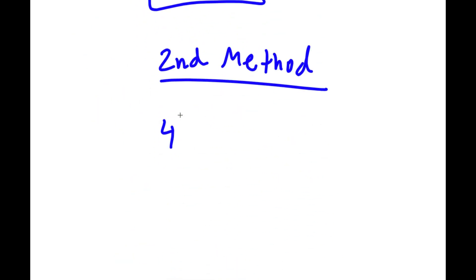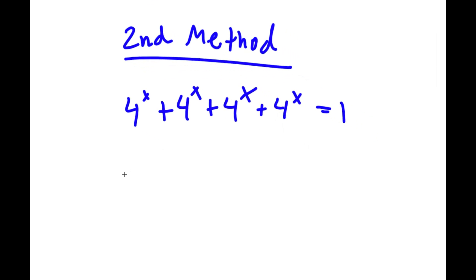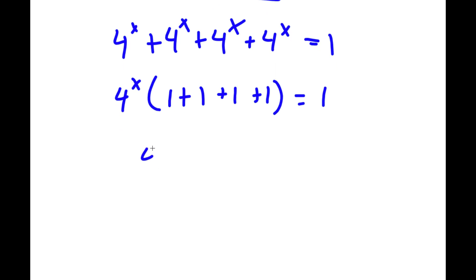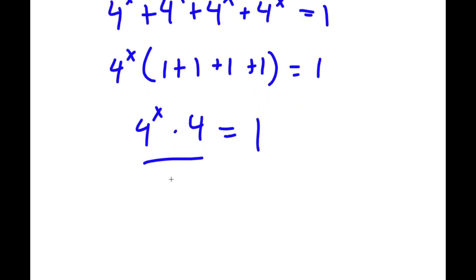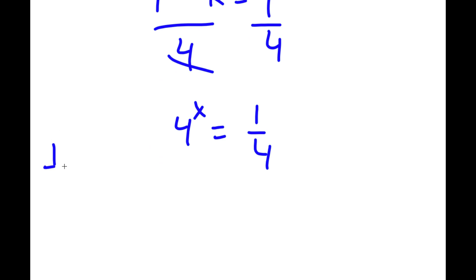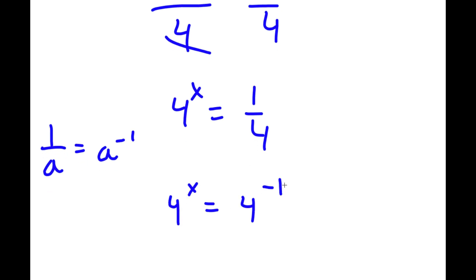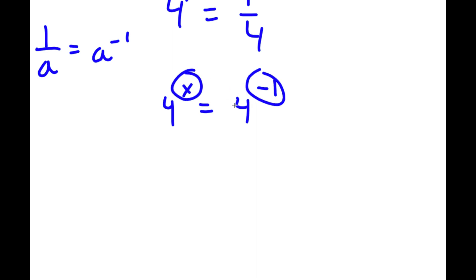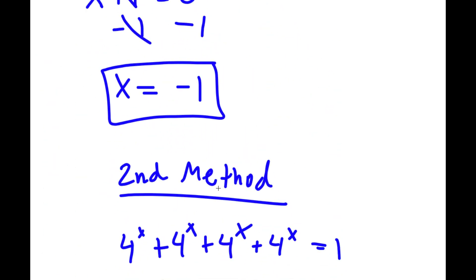For a second method, starting again with 4 to the power of x times 4 equal to 1, instead of combining the exponents I'll divide both sides by 4. These cancel out and I'm left with 4 to the power of x equal to 1 over 4. Since 1 over a equals a to the power of negative 1, I have 4 to the power of x equal to 4 to the power of negative 1. Since the bases are equal, the exponents must be equal, so x equals negative 1 again — two ways to solve this equation.